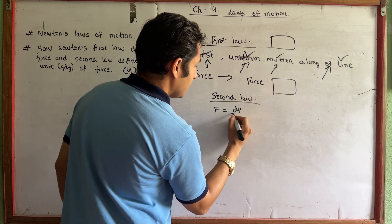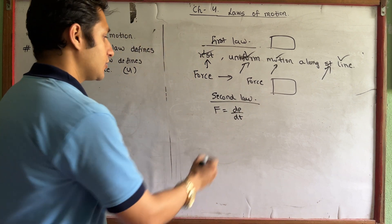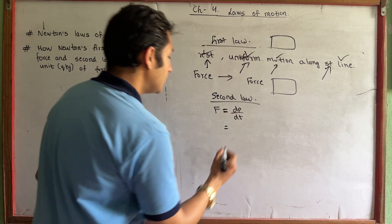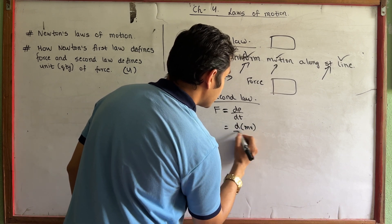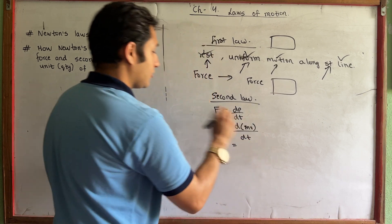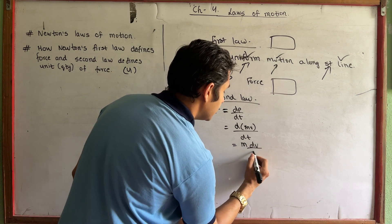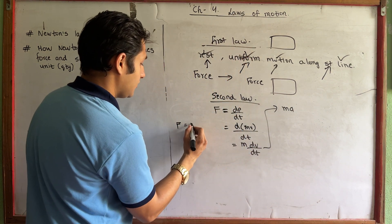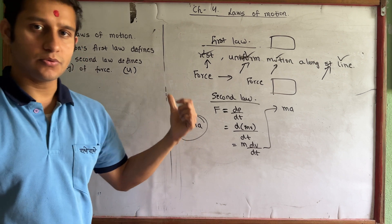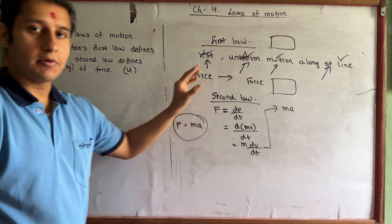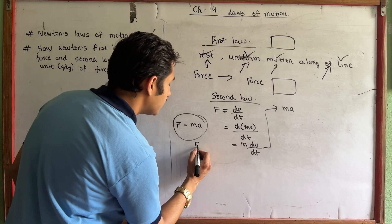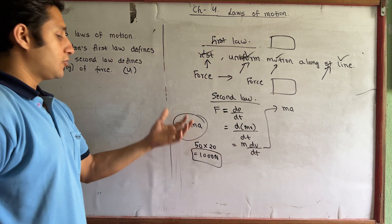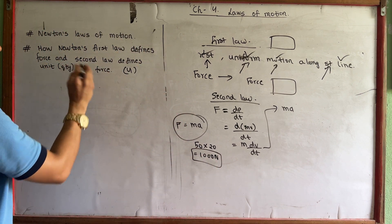F is equal to dP/dt, where P is momentum. The rate of change of momentum is the derivative. dP/dt equals m times a, so force equals m into a. The second part is the unit of force — force equals mass times acceleration. For example, mass equals 20 kg and acceleration gives force in Newtons. One Newton is one kilogram meter per second squared — that is the unit of force.